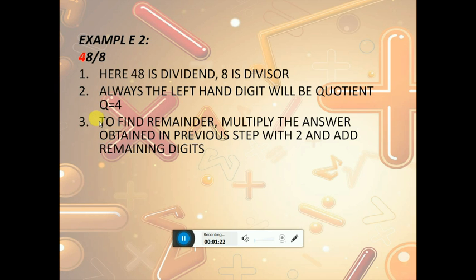To find the remainder, multiply the answer obtained in the previous step with 2 and add the remaining digits. So 4 times 2 plus 8 equals 16.